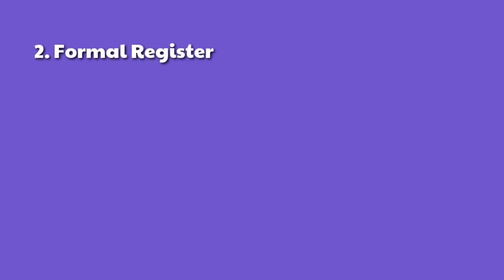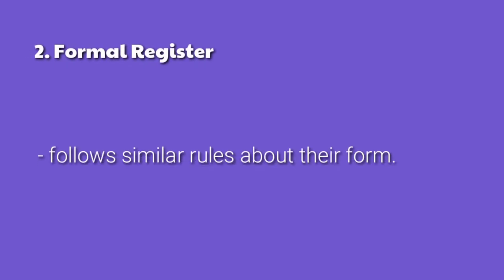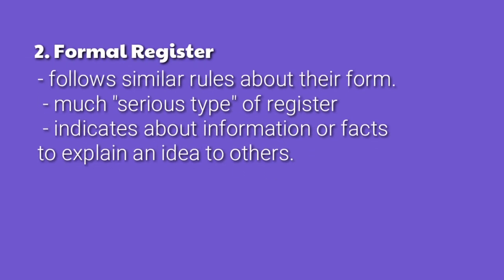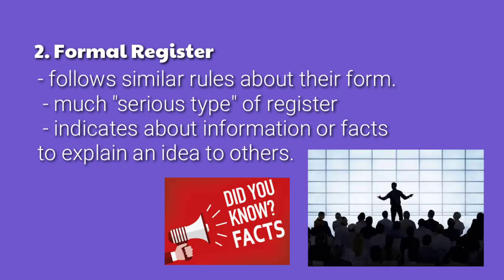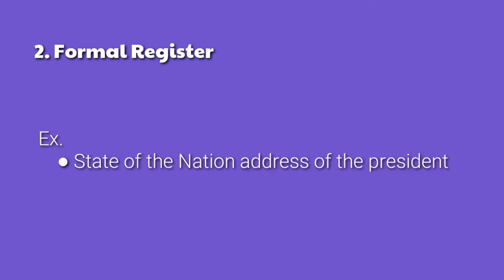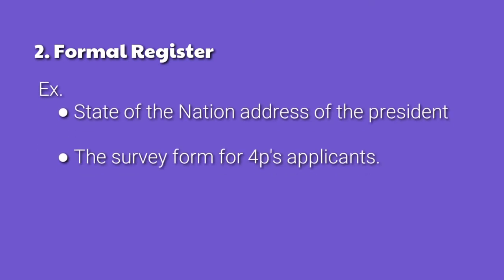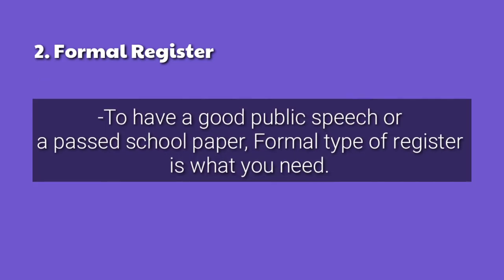Formal register. It may be written or oral acts that follow similar rules about their form. This is a much more serious type of register. It mostly involves conveying information or facts to explain an idea to others. For example, a State of the Nation Address of the president, or a survey form for 4Ps applicants. To have a good public speech or a school paper, the formal type of register is what you need.